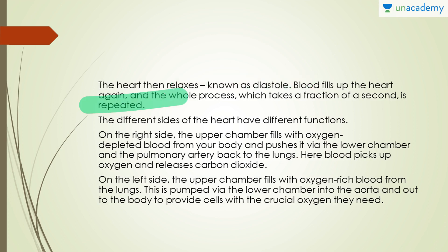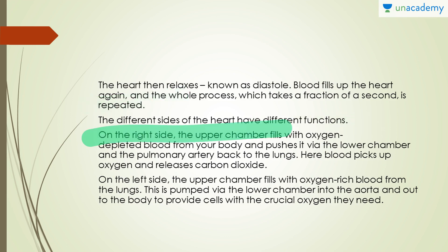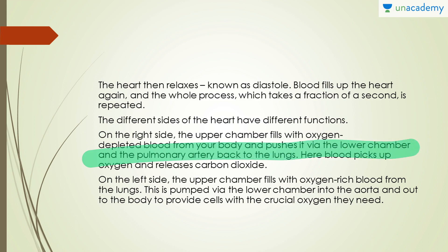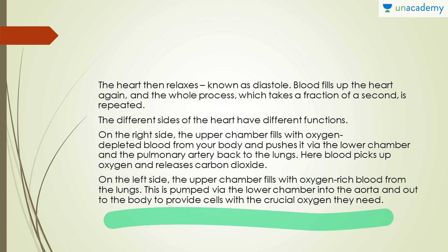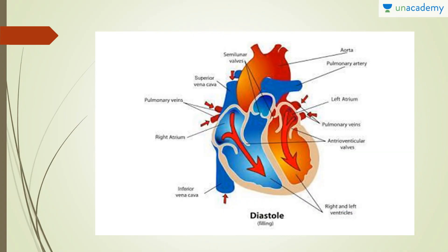The two sides of the heart have different functions. On the right side, the upper chamber fills with oxygen-depleted blood from the body and pushes it via the lower chamber and the pulmonary artery back to the lungs, where blood picks up oxygen and releases CO2. On the left side, the upper chamber fills with oxygen-rich blood from the lungs, which is then pumped via the lower chamber into the aorta and out to the body to provide cells with the crucial oxygen they need. This is a picture of diastole.